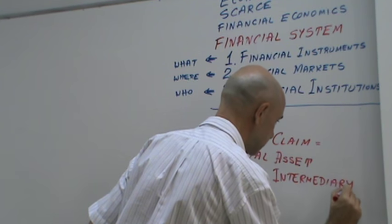The main function of secondary markets is called liquidity — to provide liquidity. Liquidity means the ability to sell an asset quickly and for its full price.